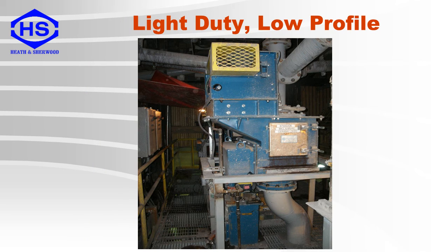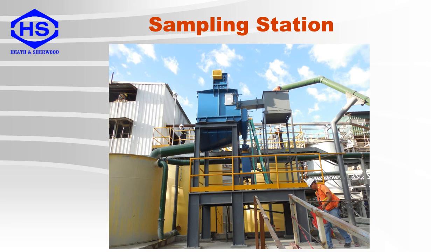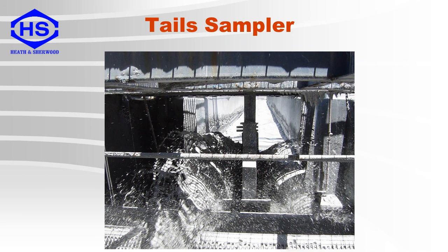This is a low-profile cross-stream sampler for use in locations where installation room is a problem — the distance between the inlet and outlet connections is minimized. Here is another example of a sampling station. The process line is connected to a collector tank, which is used to dissipate the pressure. This then feeds the primary sampler, which feeds a secondary sampler. Lastly, here is a tail stream sampler. You can see the cutter moving across the process flow. Because this flow is very large, there is also a lot of splashing occurring after the cutter.